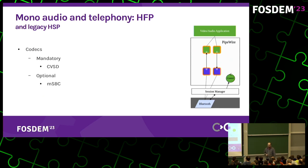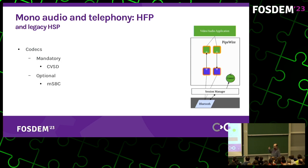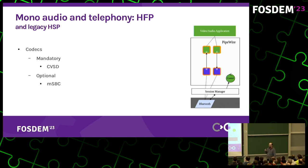HFP supports two codecs. The mandatory one is CVSD, which is a narrowband audio connection. In this case, the audio is sent directly to the Bluetooth chipset, which will encode the data through the BlueZ SCO socket. The second codec is mSBC, which is optional. It is a fixed configuration of SBC, but it needs both support from the kernel and the chipset. It is automatically detected at runtime by PipeWire.